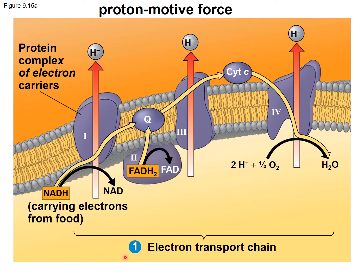As the electrons move from complex 1 through to complex 4, they're moving from higher energy to lower energy. As they're passing between the complexes, protons are being pumped from the matrix — the liquid inside the inner membrane — to the intermembrane space, which is the space between the outer membrane and the inner membrane. This builds up a proton gradient in the intermembrane space. At the same time, an electrical gradient or potential is being generated — the inside becomes more negative than the outside.